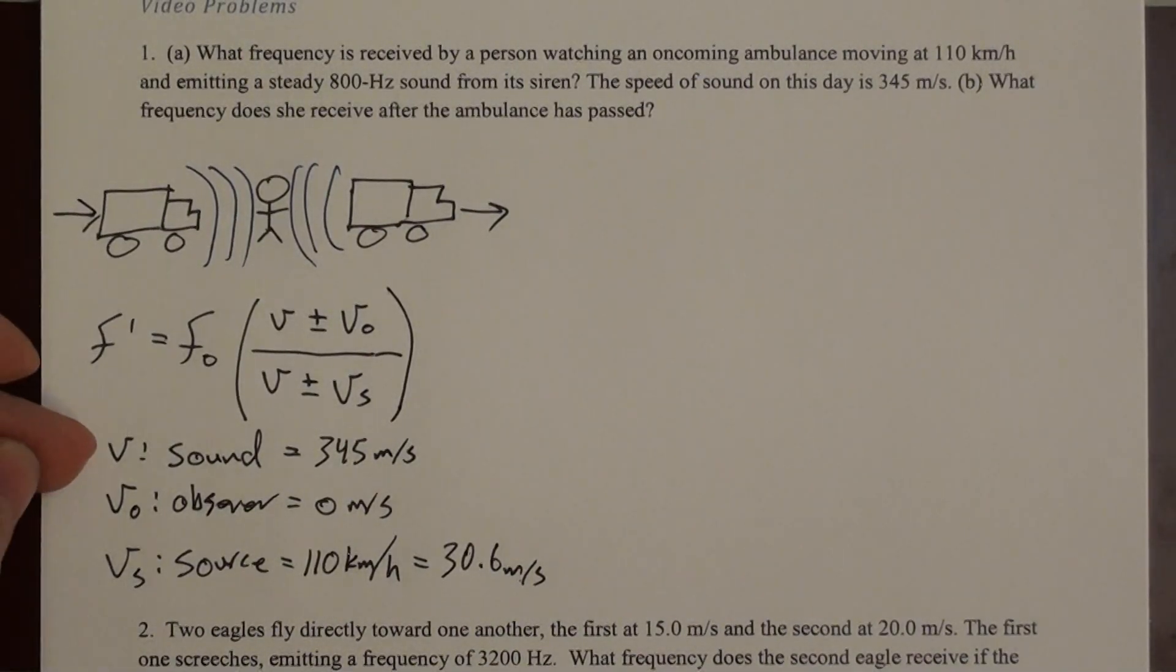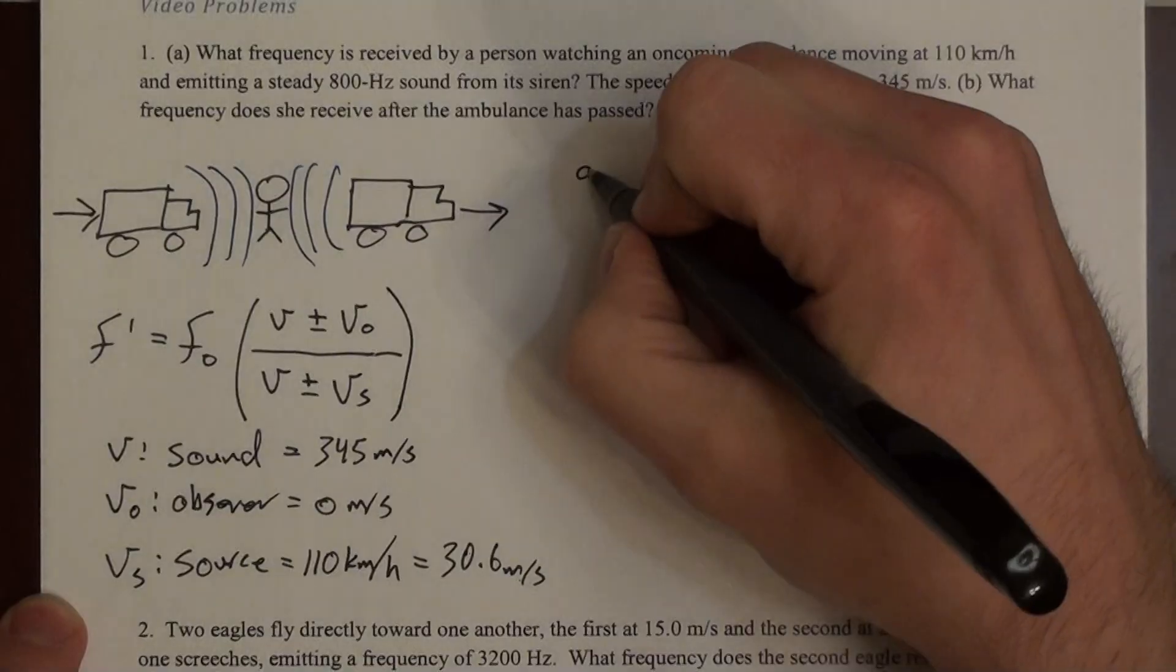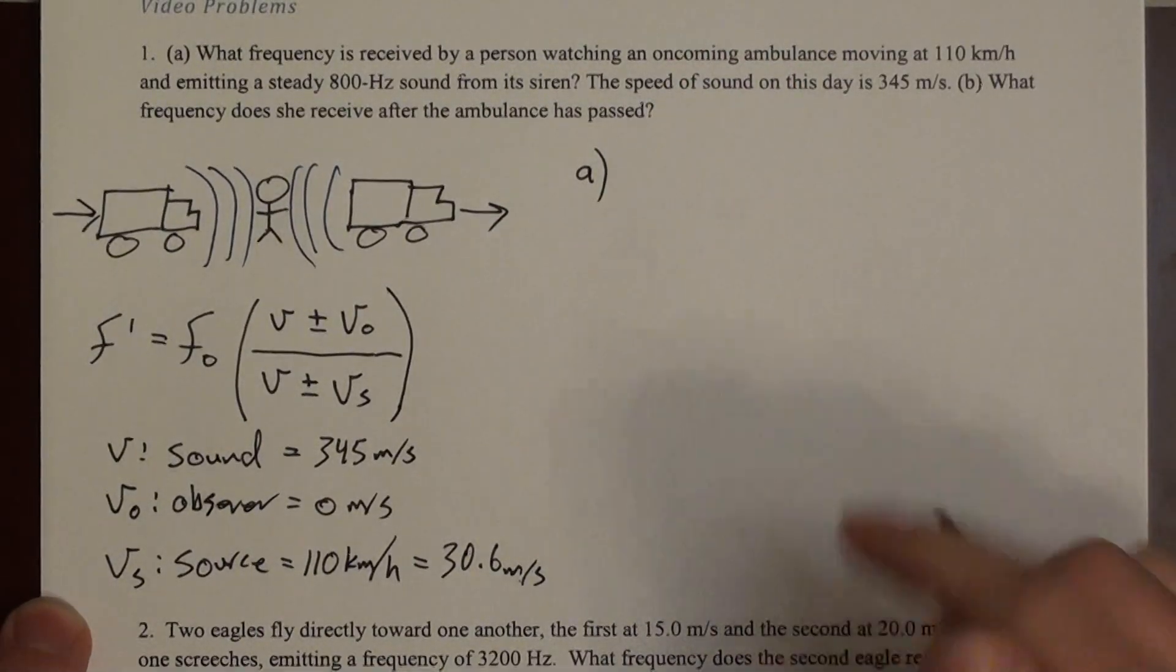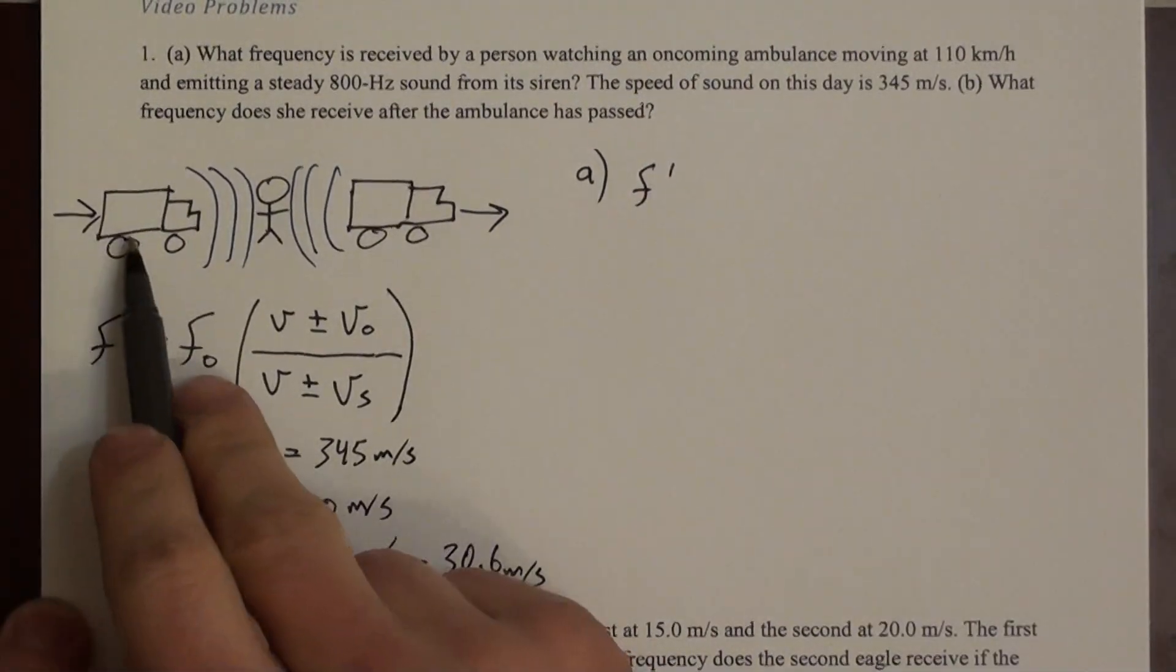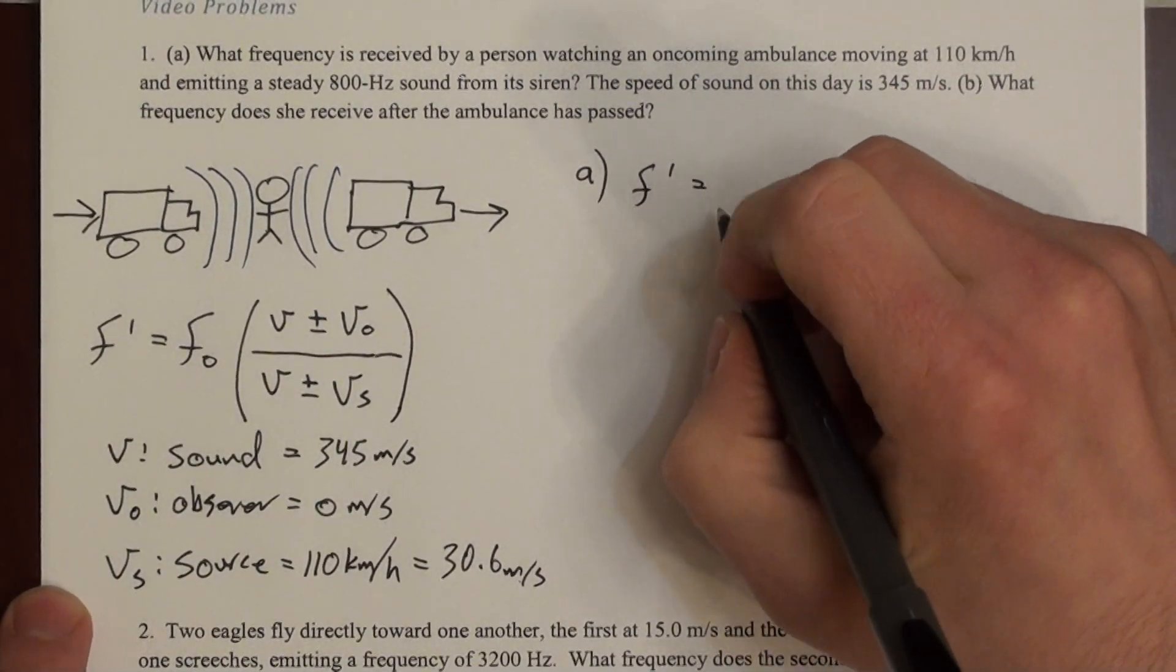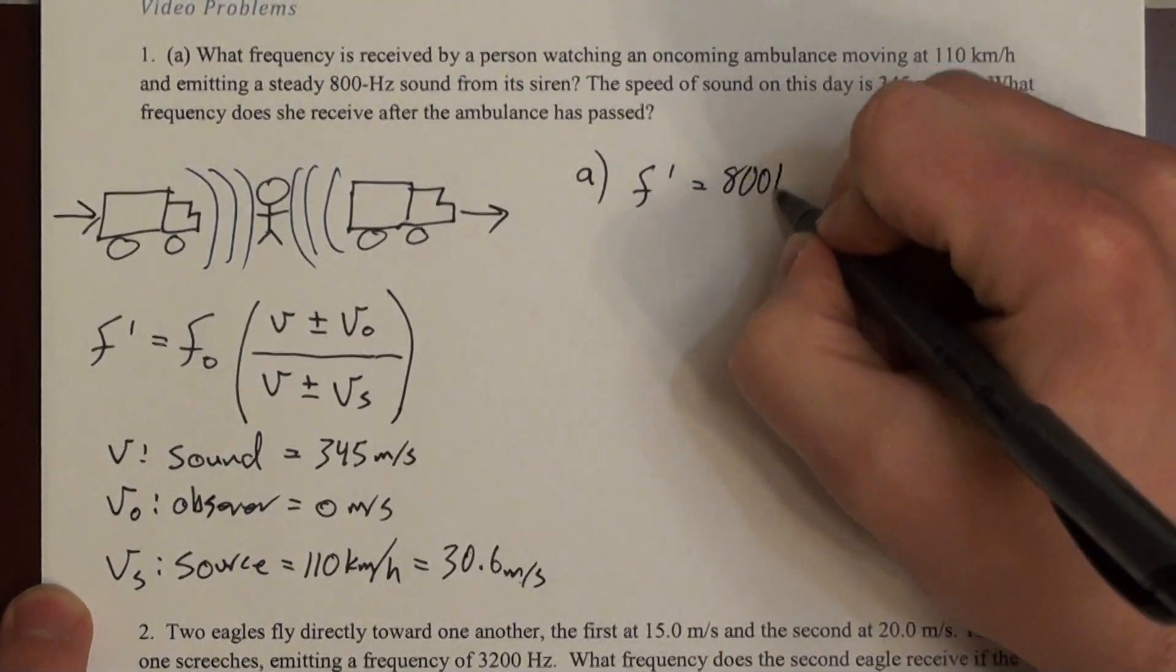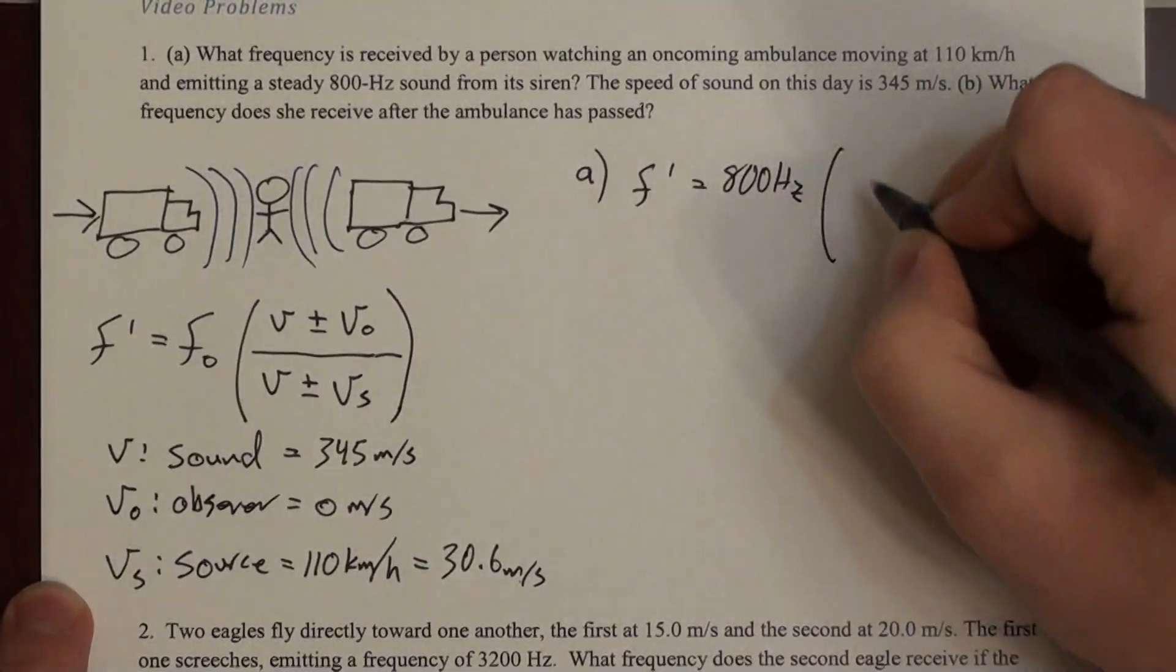So that identifies the velocities, but how do we deal with this plus and minus here? And the answer is, you can kind of use your instincts, because you know when the frequency should be increased and when it should be decreased. So let's look at this. We'll decide as we go. So for A, where the ambulance is approaching the observer, the f-naught here is 800 hertz. So 800 hertz times this fraction.